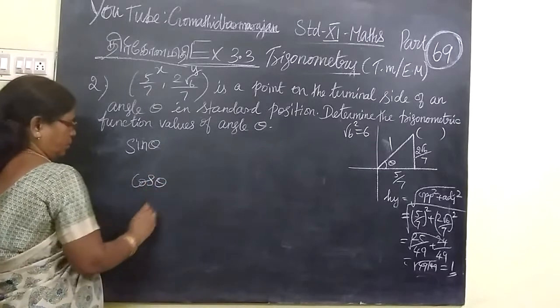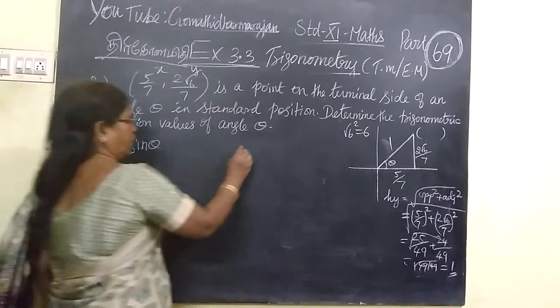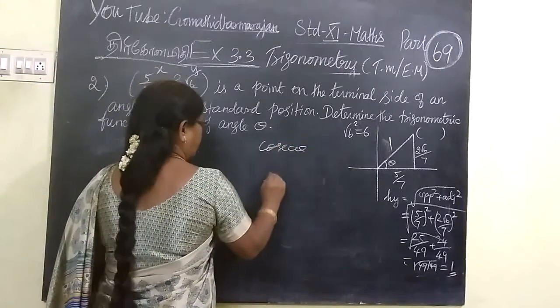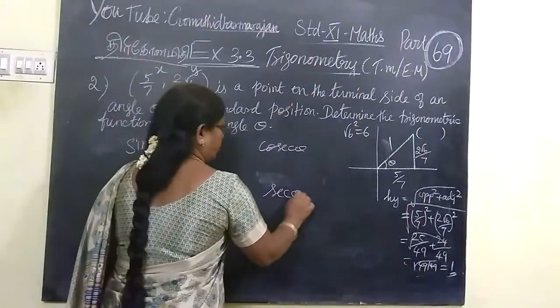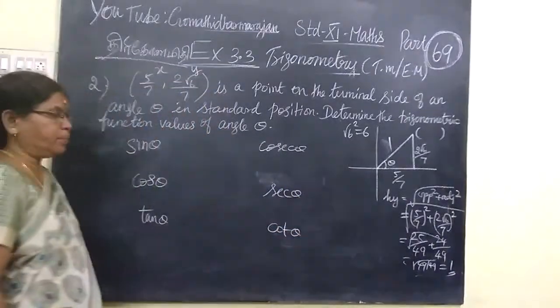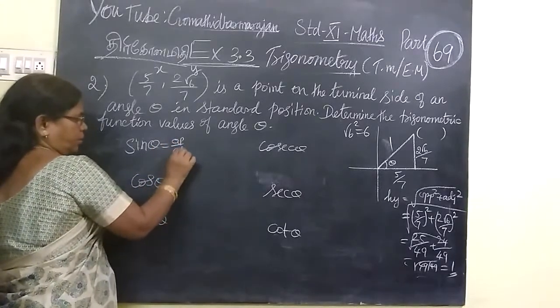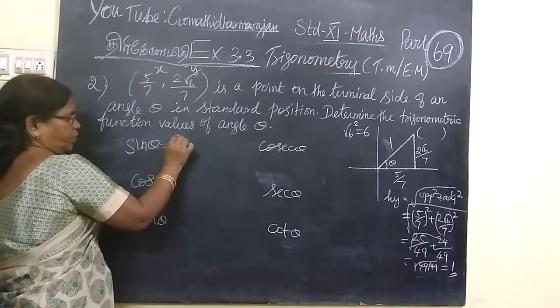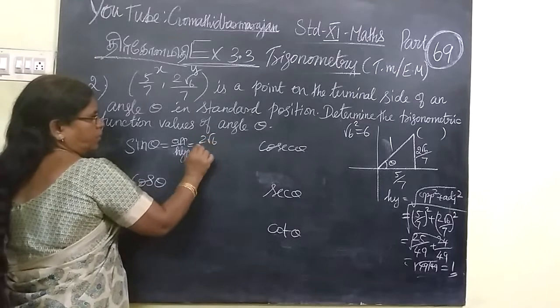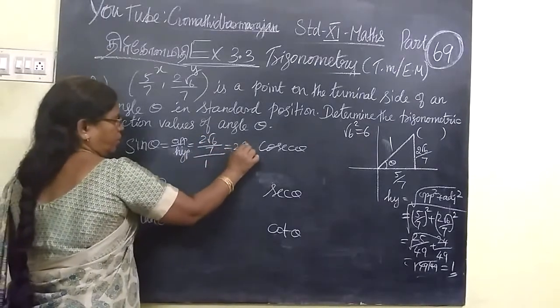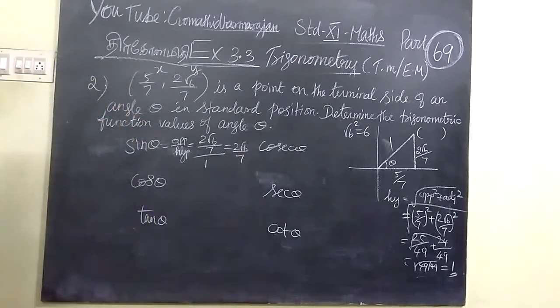That means, we want to find sin theta, then cos theta, and then cosecant, then secant, then cot. In sin theta, you will go for opposite side by hypotenuse. Opposite side is 2 root 6 by 7, hypotenuse is 1. So, answer is 2 root 6 by 7. Cos theta is adjacent by hypotenuse. This is 5 by 7.